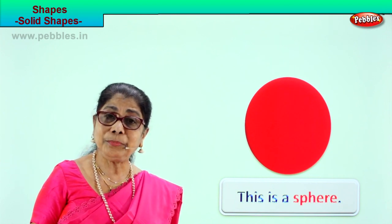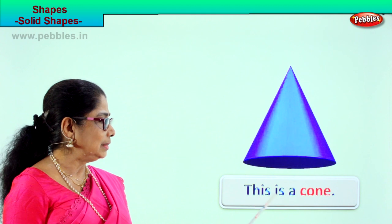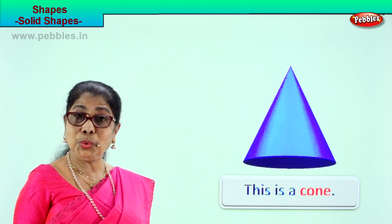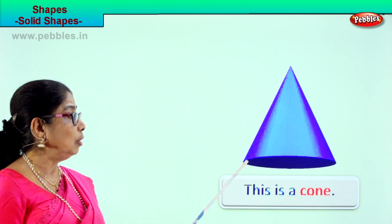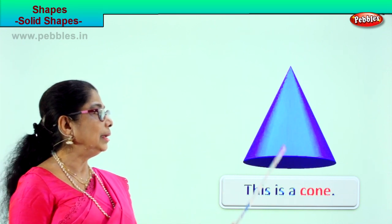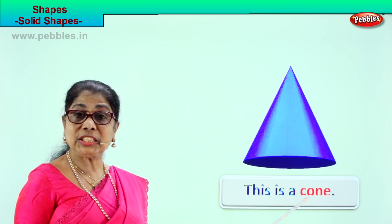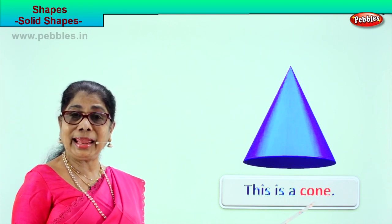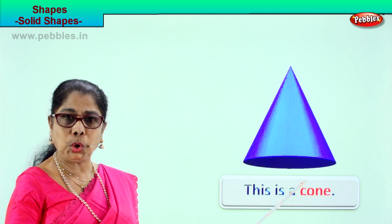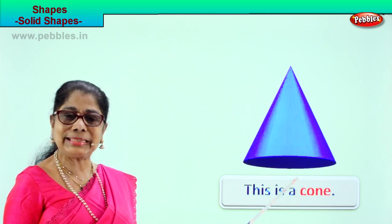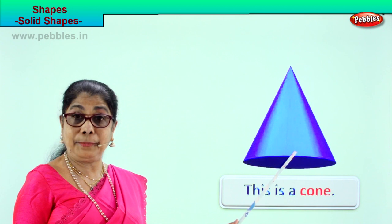Let's look at another solid shape. See what we have here — this is a cone. Have you seen cones in your school? Your maths teacher will show you. Look at that — it is almost like a triangle, but it is solid. Spell cone: C-O-N-E. Your party caps are cone shaped, but they are not solid because they are not closed. You have seen cone ice cream cones too. This is a solid cone shape.